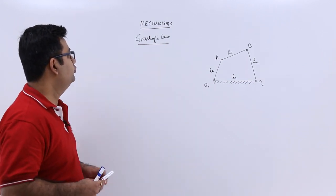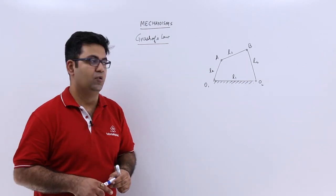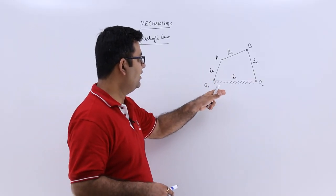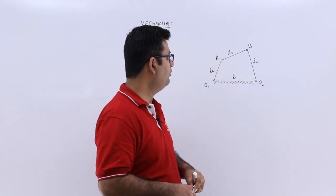Now let's talk about Grashoff's law for a 4-bar chain. This is a 4-bar chain in which you have 4 linkages: l1, l2, l3, and l4.